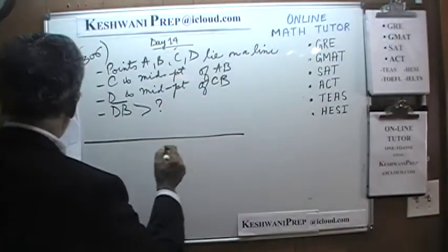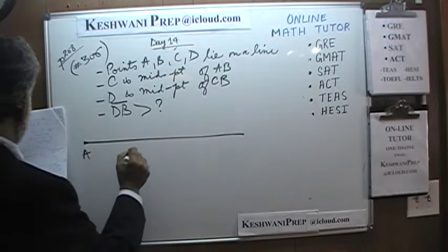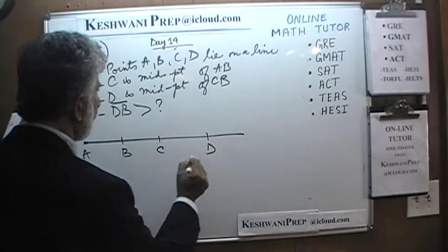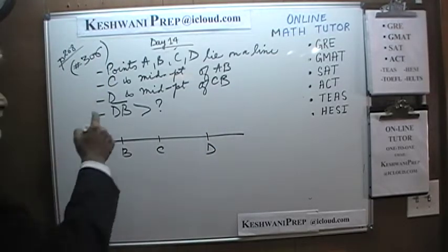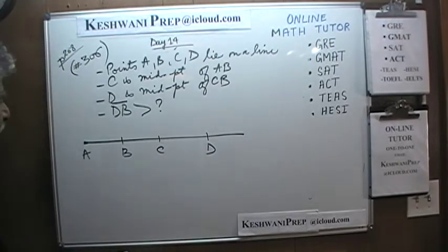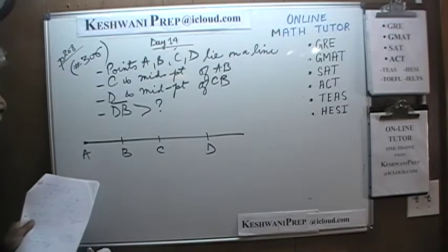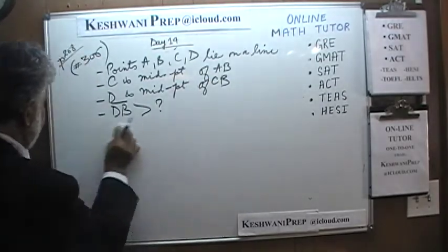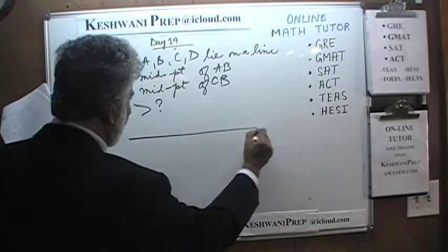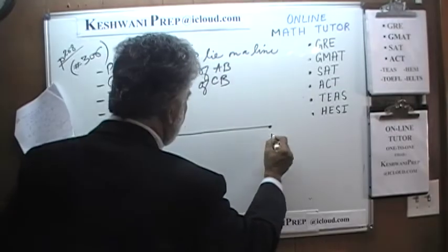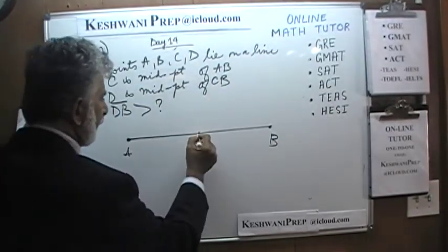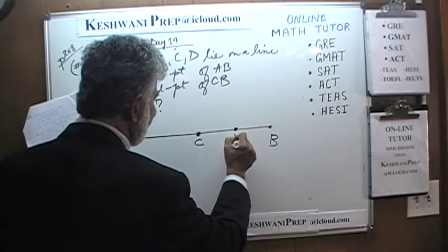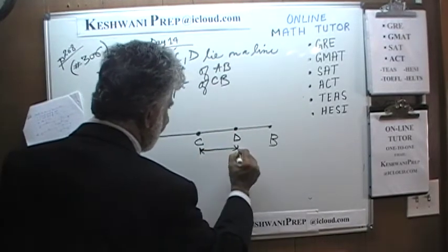Let's draw a line with A and B at the ends. C is the midpoint of A to B, so we put C in the middle. D is the midpoint of CB — so the distance CD equals the distance DB, and both equal half of CB. The distance AC equals CB.